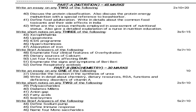Next is November 2014 question paper. In Nutrition: Discuss the protein classification and protein energy malnutrition with special reference to Kwashiorkor. Define food adulteration — write in detail about common food toxicants and their side effects in India. What are the various methods employed in assessment of nutritional status? Give a detailed explanation of nursing nutrition education. Short notes — 5 marks: Xerophthalmia. Lipoproteins. ICDS program. Hypervitaminosis. Absorption of iron. Brief answers — 2 marks: Enumerate 4 clinical features of overhydration. Dietary sources of calcium. List 4 factors affecting BMR. Enumerate the signs and symptoms of beriberi. Define respiratory acidosis.